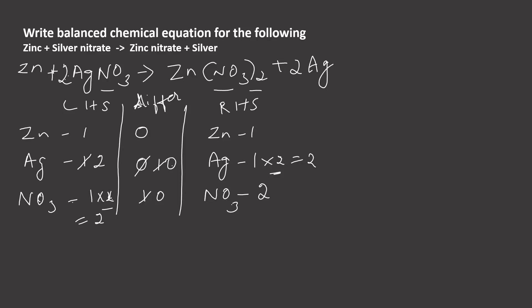Now we got 0 for all the elements in difference column. Let us check once again left-hand side atoms and right-hand side atoms to check their numbers. For zinc right-hand side also 1, for silver left-hand side 2 and right-hand side also 2, for nitrate left-hand side 2 and for right-hand side also 2. So it is completely balanced.